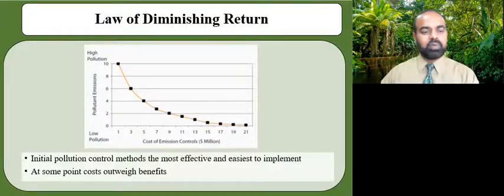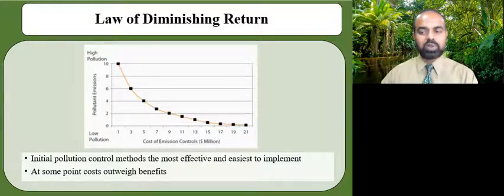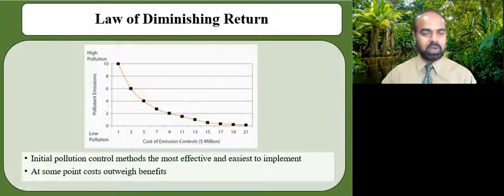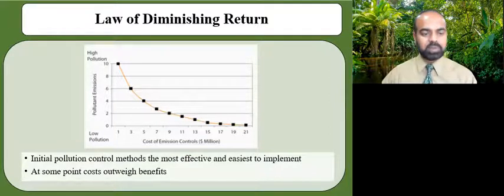The four guiding principles discussed help in formulating environmental policies in many countries around the world. However, it is important to note the law of diminishing returns. Initially, environmental control methods are usually the most effective and easiest to implement, producing the largest benefit at the lowest cost. Continued progress requires using more and more extensive environmental control methods that remove smaller amounts of pollutants. At some point, costs outweigh the benefits.